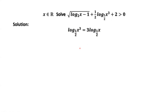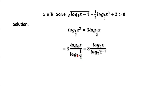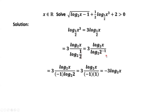We apply the change of base formula. We have 3 times log of x to the base 2, divided by log of one half to the base 2. Since one half equals 2 to the power of negative 1, we can take this negative 1 power to the front of the log function. Log of 2 to the base 2 is 1. Therefore, the final answer is negative 3 times log of x to the base 2, for log of x to the power of 3 to the base one half.